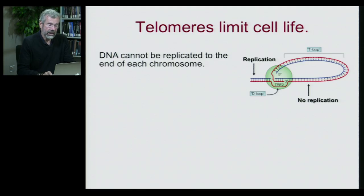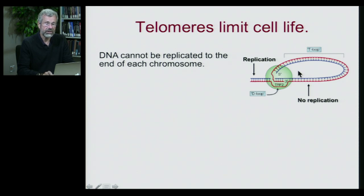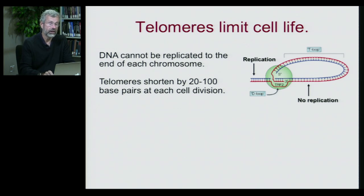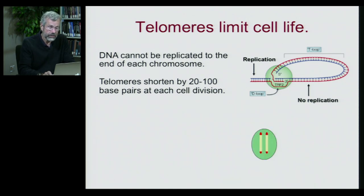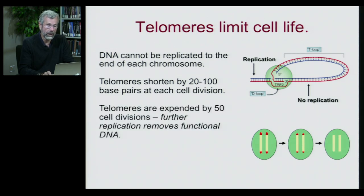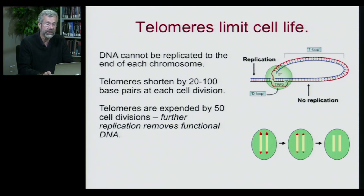DNA at replication is replicated most of the way along, but not to the absolute end of the chromosome. The replication machinery reaches a certain point and can only replicate to there - after that, it gets lost. So with each cell division, the tip of the chromosome is inevitably shortened. The telomeres are shortened by 20 to 100 base pairs at each cell division. After enough divisions the telomeres are worn out and gone, and replication starts losing functional chromosomal regions that code for protein - vital ingredients for the recipe of life.